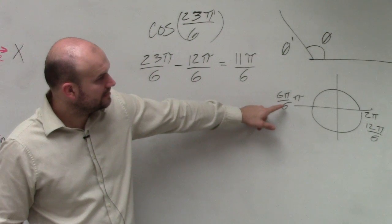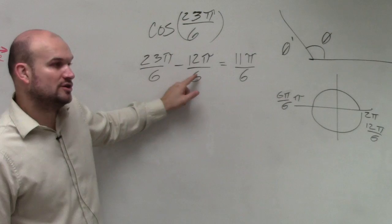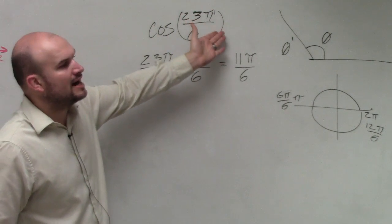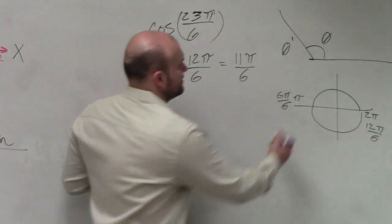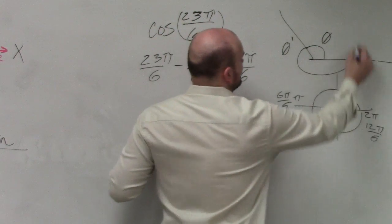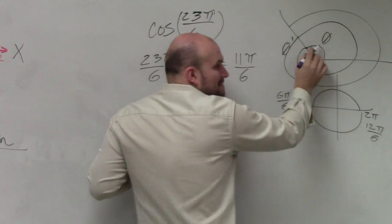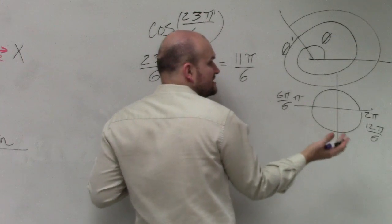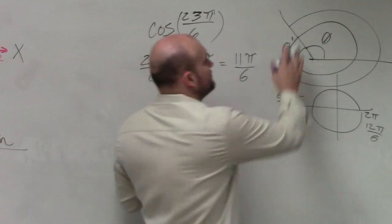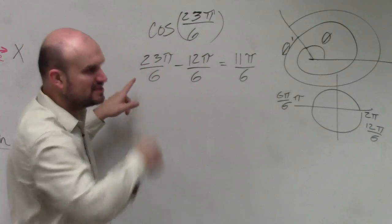Why do you do minus 12π over 6? I'm finding the coterminal angle. Remember when we did coterminal angles? You add or subtract 2π, or add and subtract 360. Because what I'm trying to say is, this angle, it doesn't matter if it looks like that or it looks like that. The angle is the same thing. I mean, the terminal and initial side are exactly the same. So what I'm trying to do is, instead of, see, this angle, 23π over 6, is a lot of rotations.